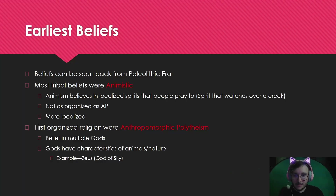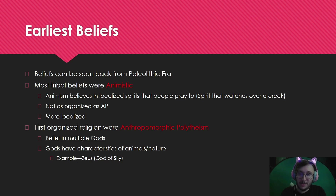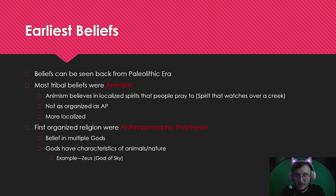Beliefs can be seen all the way back in the Paleolithic era. Most tribal beliefs were animistic. Animism believes in localized spirits that people pray to — there might be a spirit for the river that watches over it, and you pray to that individual river spirit for good harvest, good rains, or good food. It's not as organized as anthropomorphic polytheism — it's very localized. If you want to think of what animism looks like, think of movies like Pocahontas or Brother Bear.